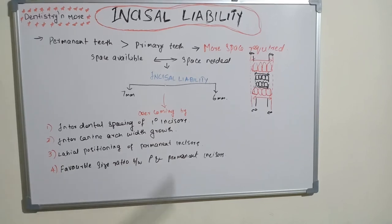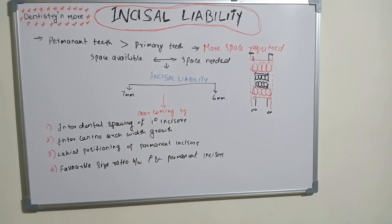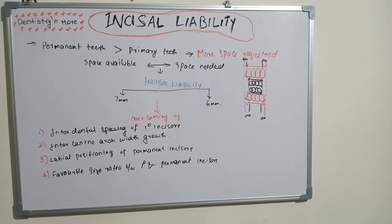The fourth mechanism is favorable size ratio between primary and permanent incisors. A comparatively larger primary tooth represents a favorable ratio. Conversely, if the primary anteriors are comparatively small relative to the permanent teeth, that is considered an unfavorable size ratio.